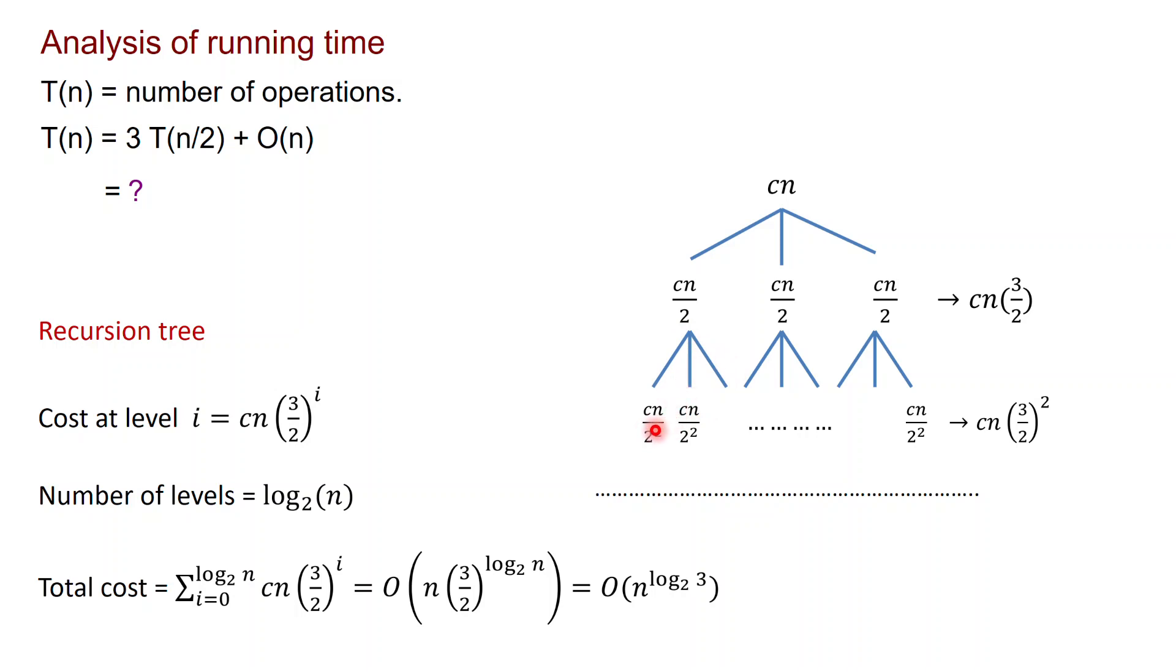Then again, each of these things is split up in three, and the number of digits goes down by half. So on this level you have integers with n over 4 digits, and the number of subproblems here, the number of recursive calls, is nine, three times three. So the cost here is cn times three halves squared. And so on. So in general, the cost at level i is cn times three halves to the i.